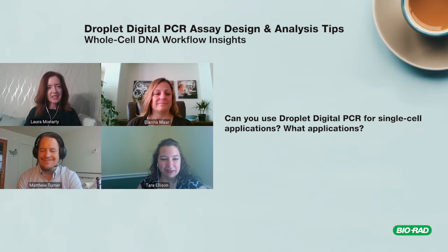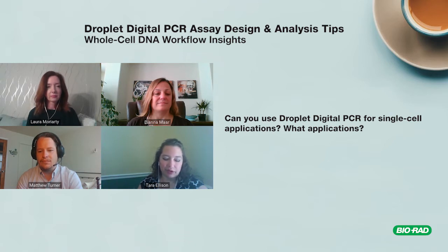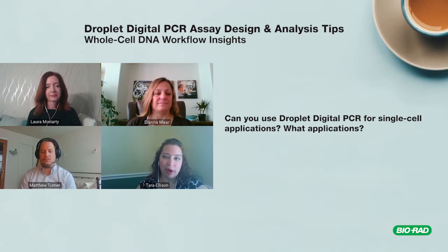Laura asked for more detail on the CAR-T application. Tara explained: with CAR-T, you take T cells from a person that don't have the particular receptors you want them to have in order to fight cancer or another disease. You introduce a novel vector that expresses the receptor. But transfection is never 100% — sometimes it's an awful lot less — so to optimize upstream and do quality control downstream, you need to know how many cells actually have the receptor. ddPCR is a great way to do that.